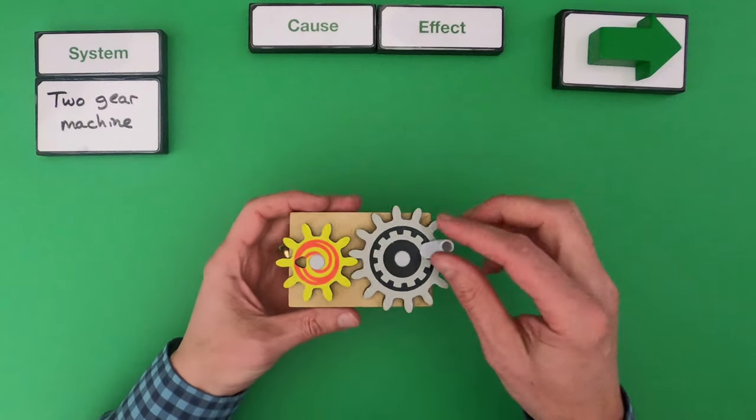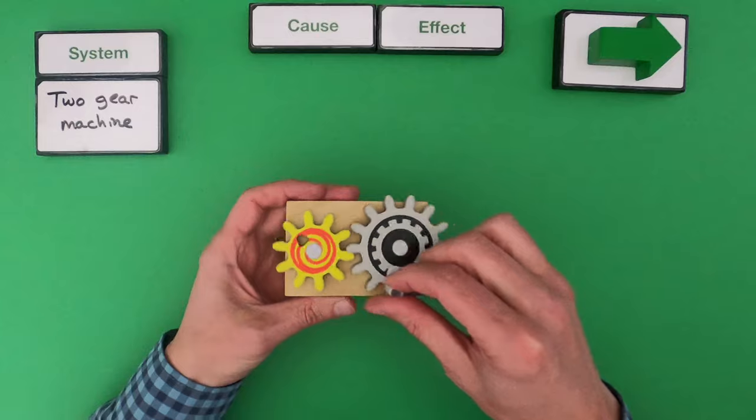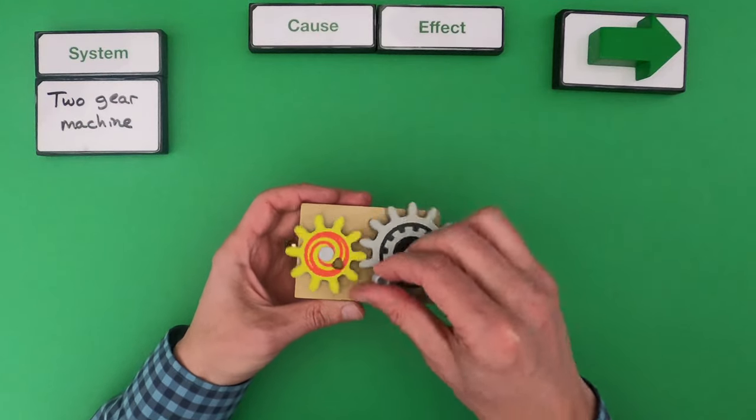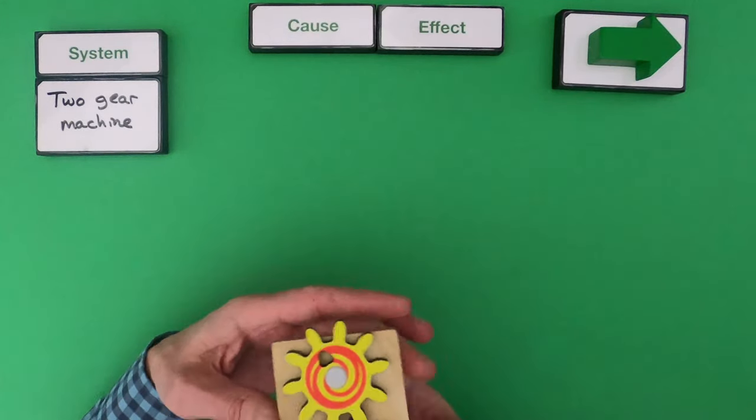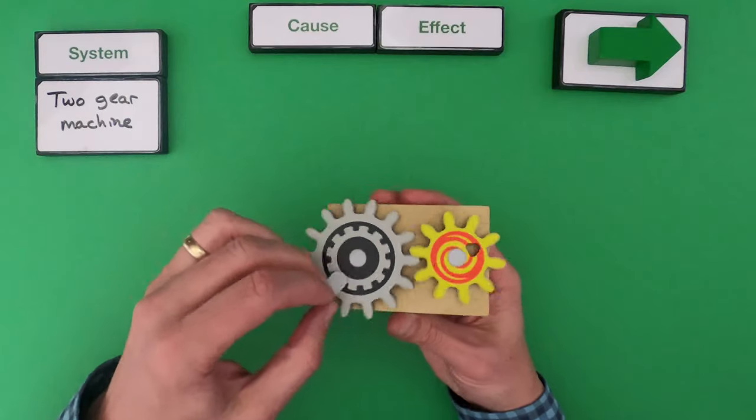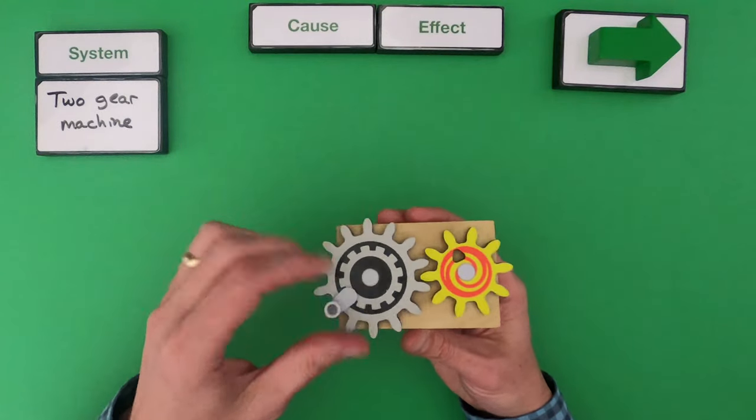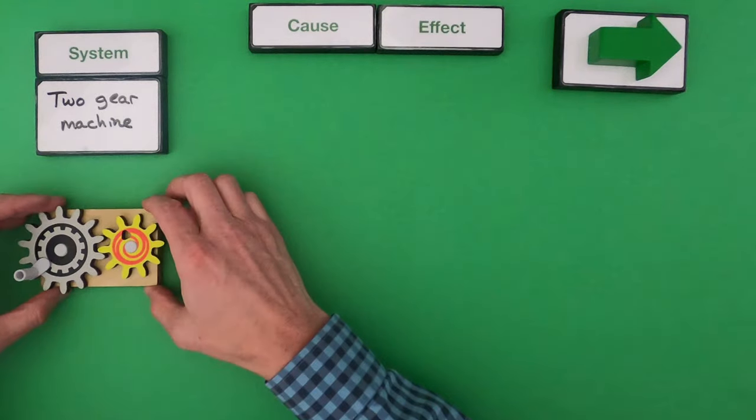And I should play around with the system or the object first. So in this system I can move the gray gear and it's causing the yellow gear to move. So it doesn't matter which way I hold it. So I think I understand how this works. I'm going to put it over here.